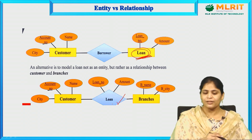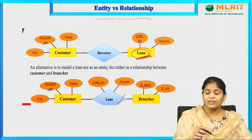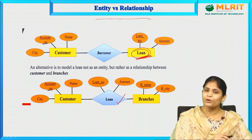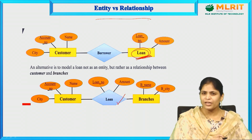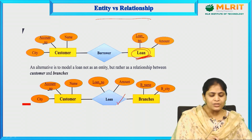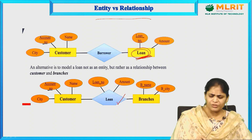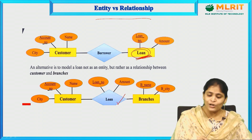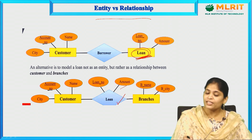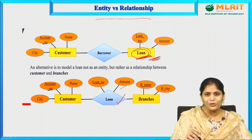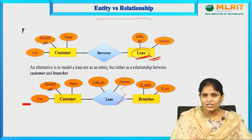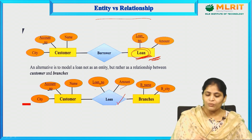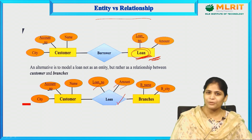The same object that you are going to represent can be considered as an entity or as a relationship — that is the reason why we have entity versus relationship, and it purely depends upon the database application you are going to develop. The customer borrows loan from different branches. Here the loan contains loan number and amount. In the first diagram, the loan is considered as an entity; in the second diagram, the same loan is considered as a relationship with descriptive attributes.